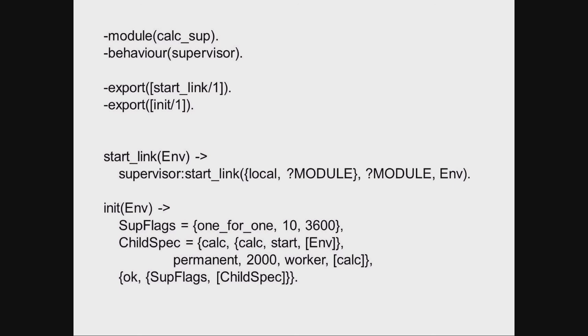The child specification has a unique identifier of calc. We start the behaviour using calc:start passing in the environment variable — note that calc:start calls gen_server:start_link, so it's the gen_server's responsibility to link itself to the supervisor. We want this child to be permanent, so it must be restarted regardless of how it stops. Upon termination we give it a maximum of two seconds. For software upgrade purposes, we declare it as a worker implemented in the calc module. Finally, we return the tuple ok with the supervision flags and child specification list, and the supervisor starts each child synchronously. Once all children have started, start_link returns ok and the PID. If any child terminates during startup, the supervisor terminates all children and itself — so no child may fail during the startup phase.